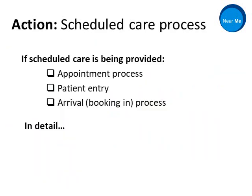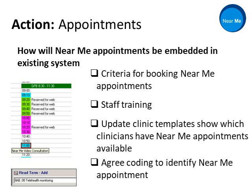For scheduled care appointments, three things need to be thought about: the appointment process, how patients enter the system, and the booking in or arrival process. In terms of appointments, the criteria for booking Near Me appointments needs to be agreed, staff need to be trained on that criteria, and clinic templates need to be updated to show when clinicians have Near Me appointments available — considering, for example, whether Near Me is offered in just one or two rooms or for all appointment slots at all times. It's also important to agree some coding so that Near Me appointments can be clearly identified, in the same way that telephone appointments are.